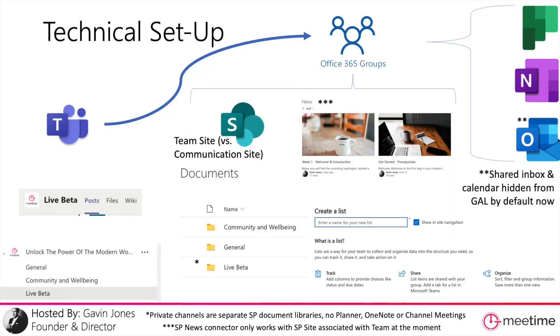Setting up a team also sets up a Planner and a shared OneNote notebook for you. You technically also get a shared inbox in the background, but depending on when you set the team up you may or may not see it. As Teams has matured, that shared inbox is now hidden from the global address list by default, so your IT admin needs to do some work to surface it — but for most people you don't need it anyway, which is why Microsoft decided to hide it.